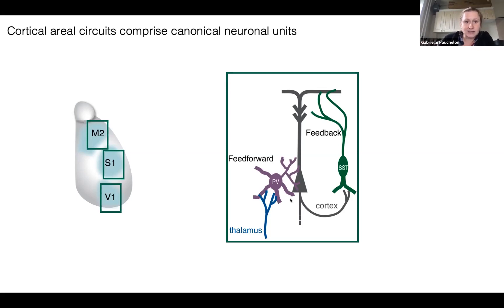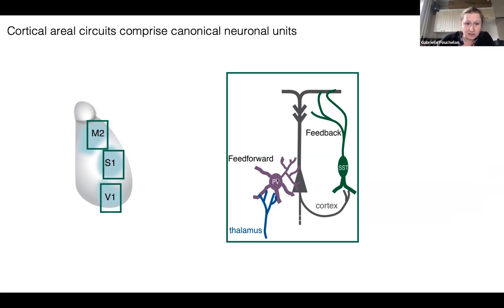I'm interested in two types that together represent the biggest proportion of interneurons in the cortex. They're born from the same progenitor structures but differentiate into very distinct interneurons. PV interneurons provide feed-forward inhibition by receiving strong thalamic input and sending this inhibition to the cortex, while SST interneurons provide feedback inhibition by receiving a lot of cortical inputs.